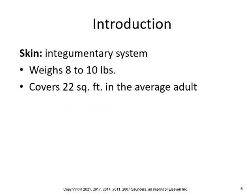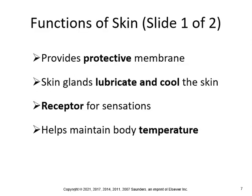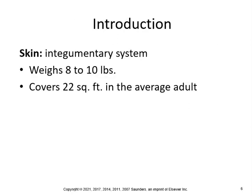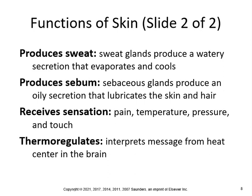The skin is also known as the integumentary system. It weighs about 8 to 10 pounds depending on the individual and covers 22 square feet in the average adult. It provides a protective membrane, skin glands to help lubricate and cool the skin, receptors for sensations, and helps maintain body temperature. It produces sweat — sweat glands produce a watery secretion that evaporates and cools. Sebaceous glands produce an oily secretion called sebum that lubricates the skin and hair. The skin receives sensations of pain, temperature, pressure, and touch, and thermoregulates by interpreting messages from the heat center in the brain.